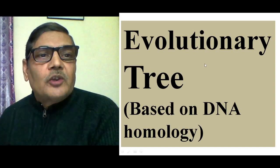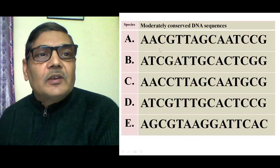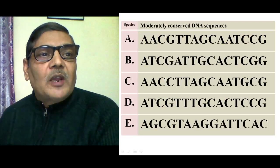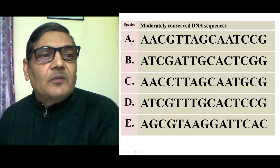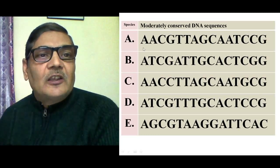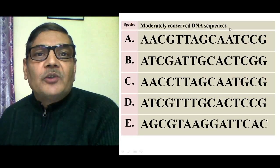In this video, we are going to learn the construction of an evolutionary tree, which will be based on DNA homology. In this table, there are five species shown on the left side. There is a specific segment of DNA in their genome which has much conserved nucleotides. Particularly, moderately conserved DNA sequences are used for constructing an evolutionary tree or phylogenetic tree.